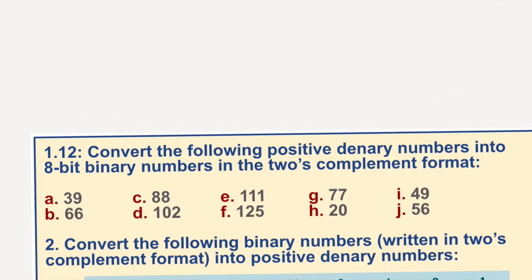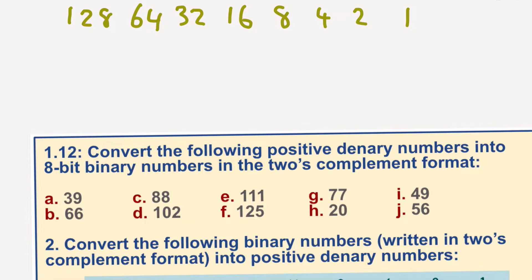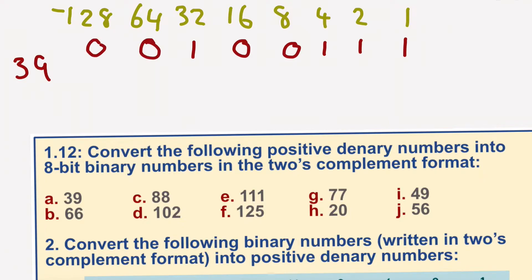So we've got 39. If we're writing 2's complement, it means 8-bit 2's complement. I'm going to write the column values: 1, 2, 4, 8, 16, 32, 64, and 128. But this time, this becomes a minus number - that's what 2's complement is about. The most significant bit becomes a minus number, and in the next task you'll see why. But in this one it's just straightforward.